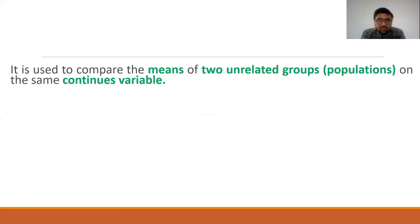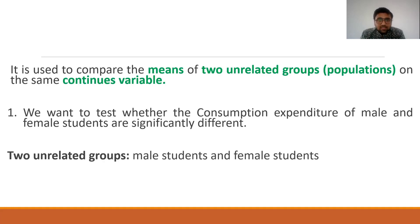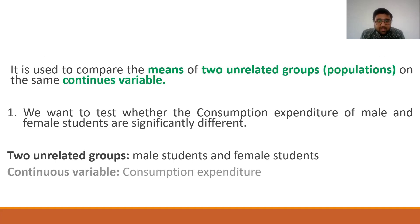Let's begin with the meaning of the independent t-test. The independent t-test compares the means of two unrelated groups on the same continuous variable. For example, you want to test whether the consumption expenditure of male and female students are significantly different. Here we have two unrelated groups — male students and female students — and one continuous variable, that is consumption expenditure.